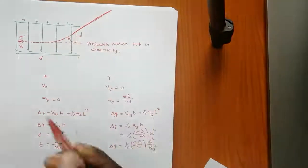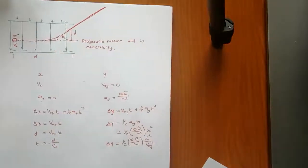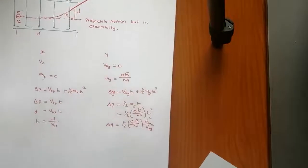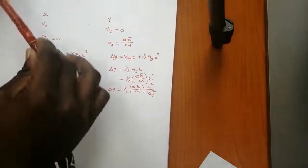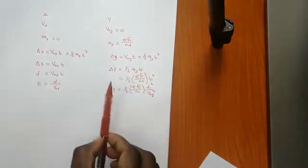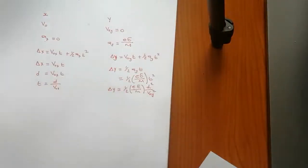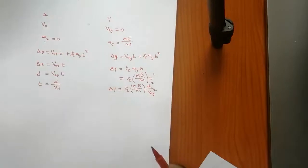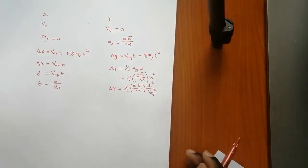Let's say this is distance d at some angle theta. You can determine the time it took from the initial position to where it starts to project, the acceleration, and the velocity. We will do one or two examples to see if we still follow.